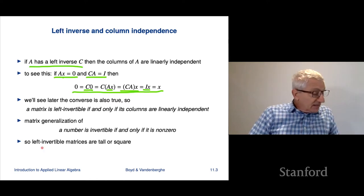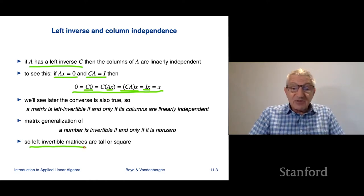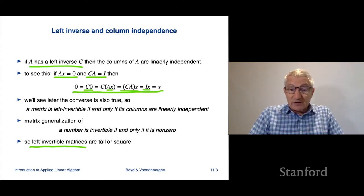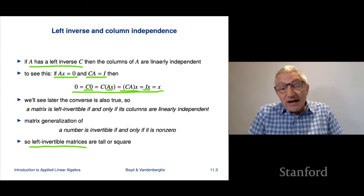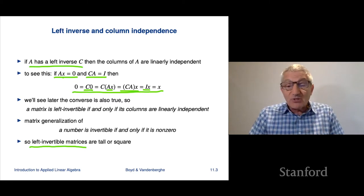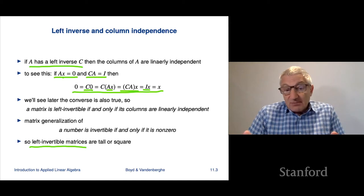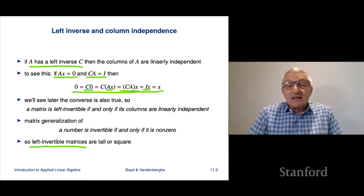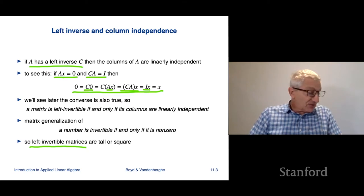This tells us immediately that if a matrix is left invertible, it has to be tall or square. Because if it were wide — meaning it has more columns than rows — the columns are automatically dependent and therefore you cannot have a left inverse.